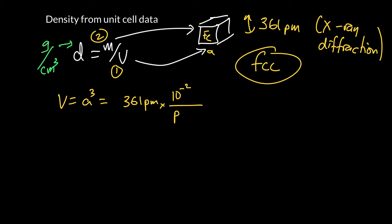So pico means 10 to the minus 12. So a picometer is 10 to the minus 12 of a meter. And centi means 10 to the minus 2. So a centimeter is 10 to the minus 2 of a meter. So we've done that conversion.